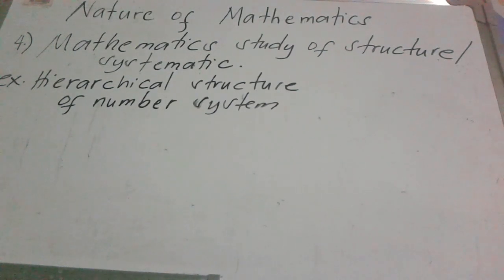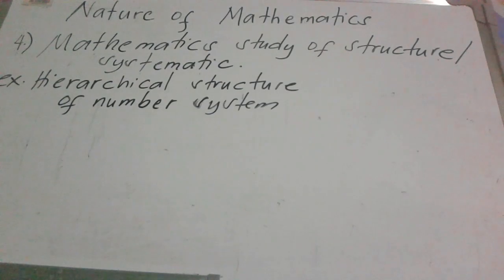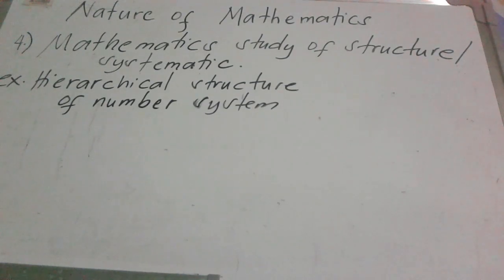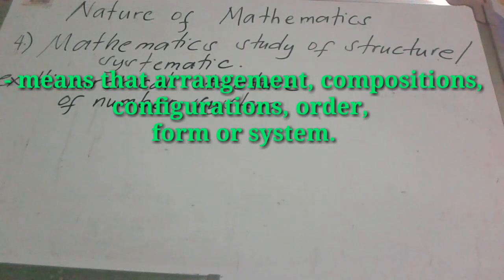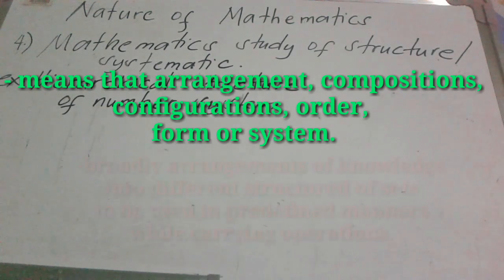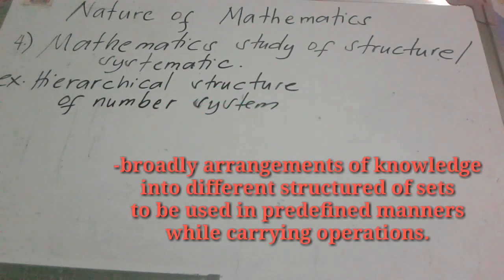So mathematics is the study of structure or systematic. Mathematics is structured, so it is systematic. It means the arrangements, compositions, configurations, order, form, or system. It is broadly the arrangements of knowledge into different structured sets to be used in predefined manners while carrying out operations.